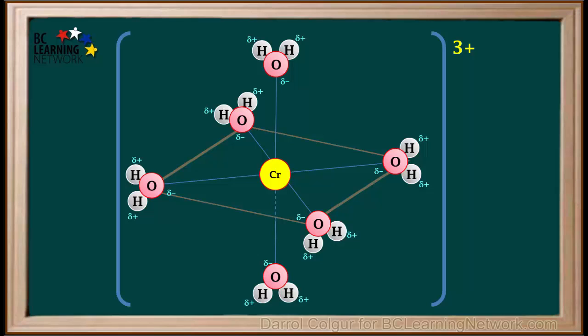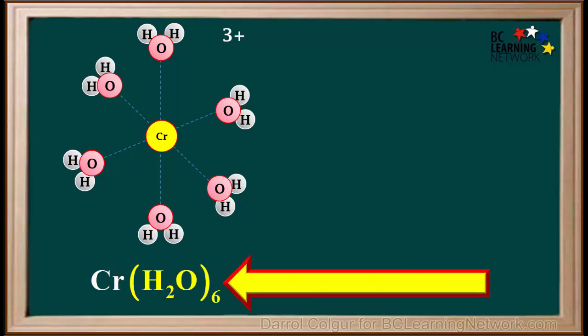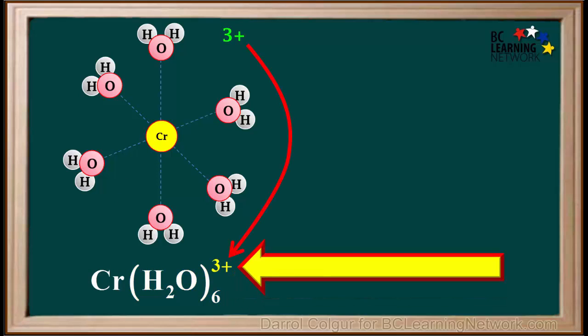So the +3 charge on the chromium can be considered as the net charge on the whole ion. So this ion consists of a chromium atom in the center, surrounded by six water molecules around the outside. The ion as a whole has a charge of 3+. The formula for this ion is Cr(H2O)6, and the whole ion has a 3+ charge, so 3+ is written here.